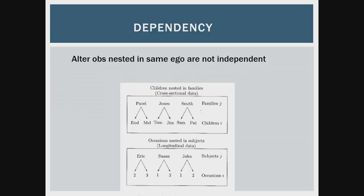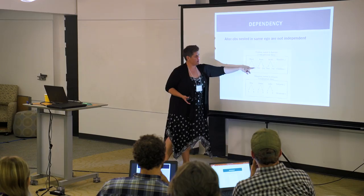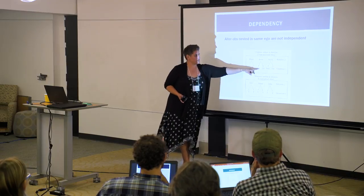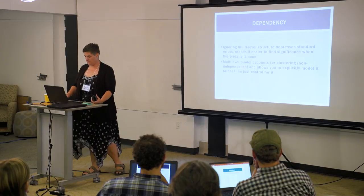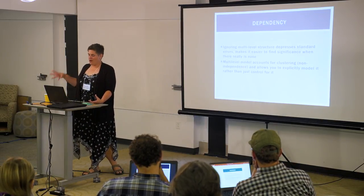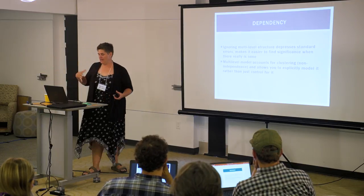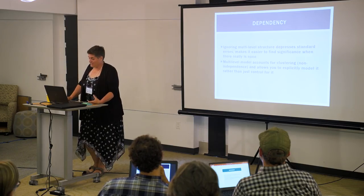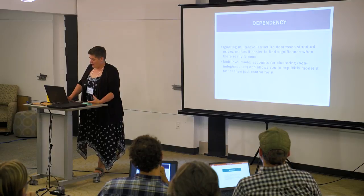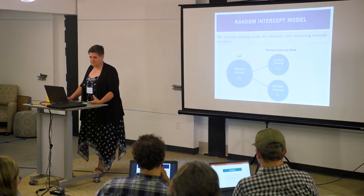This is the general structure of these data — think families and children, or egos and alters. Level one uses an i-subscript; level two uses a j-subscript. Why do we have to account for this dependency? Basically, you get it all wrong — it depresses your standard errors, making it a lot easier to find significance when there isn't really any. While that might be exciting for shitty dissertation data, when you're producing real science you care about your standard errors.